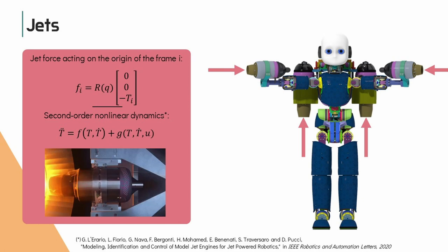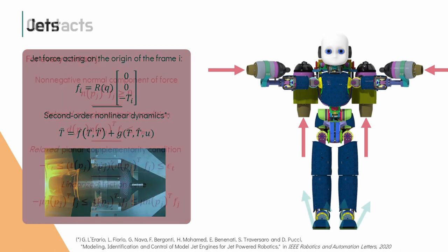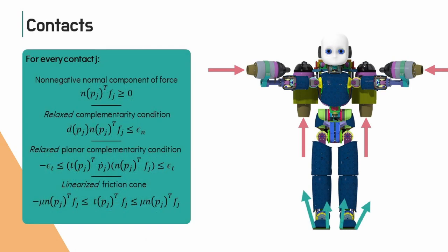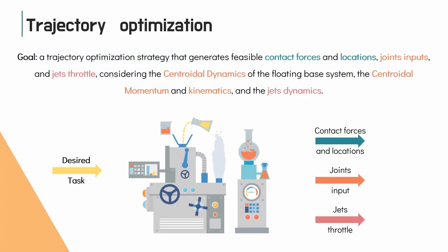In previous work, we identified a second-order non-linear model that connects the throttle to the jet intensity, approximating the jet dynamics. The contact forces, on the other hand, actuate the legged locomotion mode. The contact dynamics is defined through friction cones and complementarity conditions in their relaxed forms. The proposed trajectory optimization strategy generates feasible contact forces and locations, joint torques, and jet throttle, considering the Centroidal Momentum Dynamics and the contact and jet dynamics.